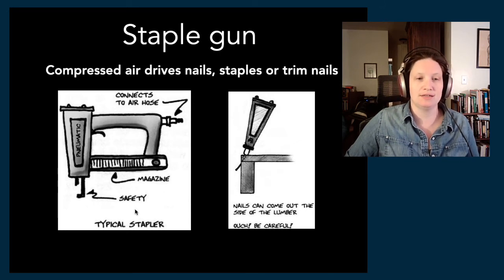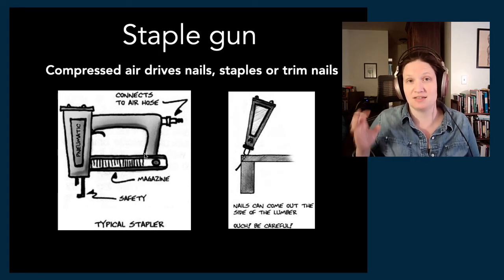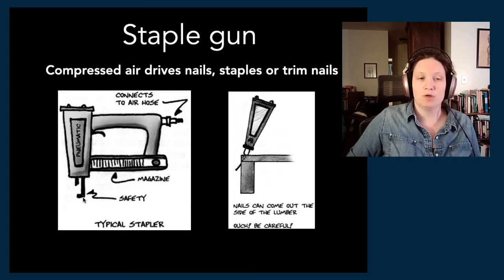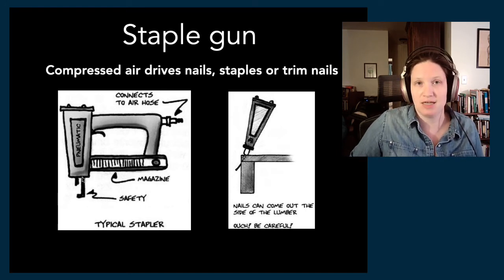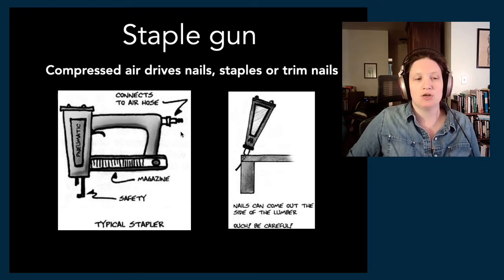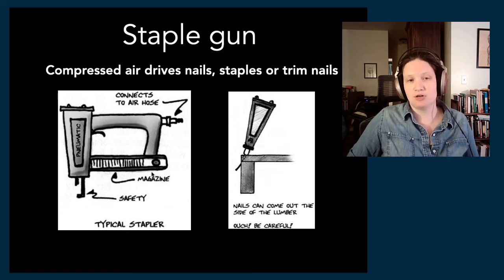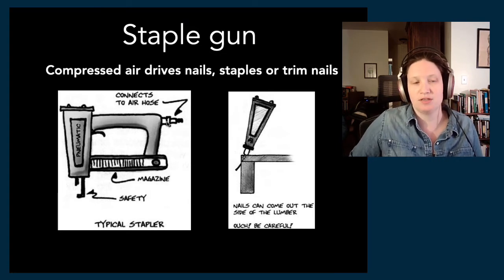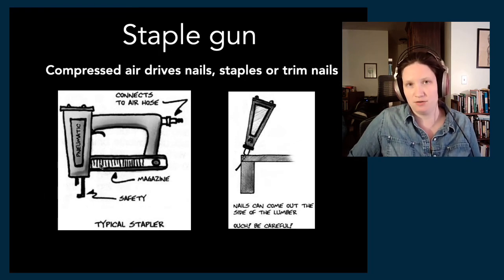Each pneumatic tool has a specific setup, but there's always a magazine where you put in the staples — they come in a clip that you slide into the track. It has a safety which prevents you from firing staples into the air; it has to be pressed down against the material for the gun to fire. It also has a valve connection for the air hose. For safety, we always load and unload the staple gun when it's not connected to air, so it doesn't have power in it. Once loaded, you reconnect the air.